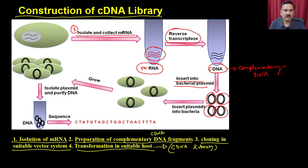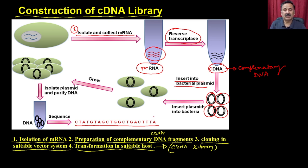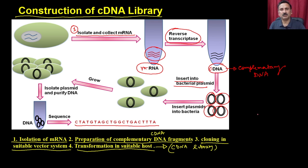From the cDNA library you isolate the clones of your interest, identify the DNA sequence, and sub-clone it into an expression vector for protein or enzyme production. Before discussing the isolation of messenger RNA, we must first understand the structure of the messenger RNA, because that will lead to the approaches you can use to isolate the total messenger RNA.